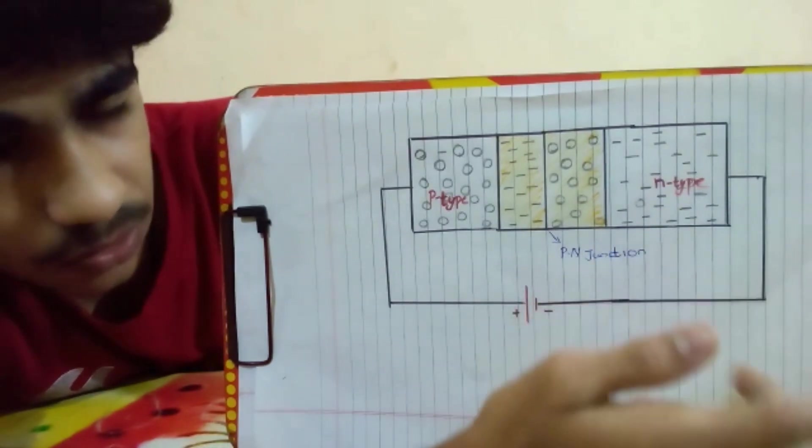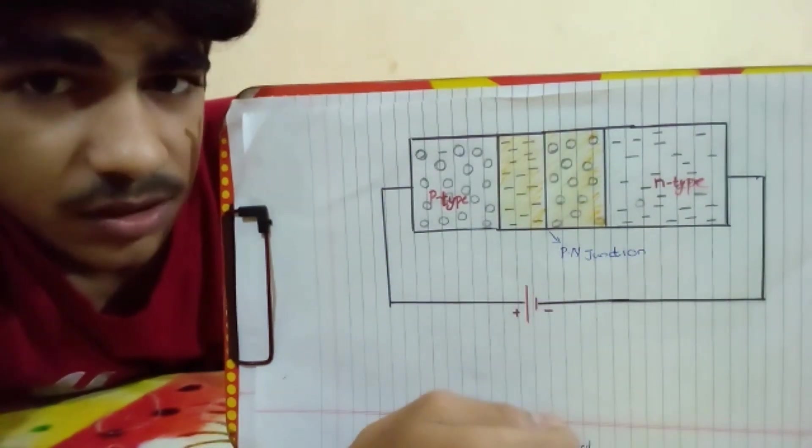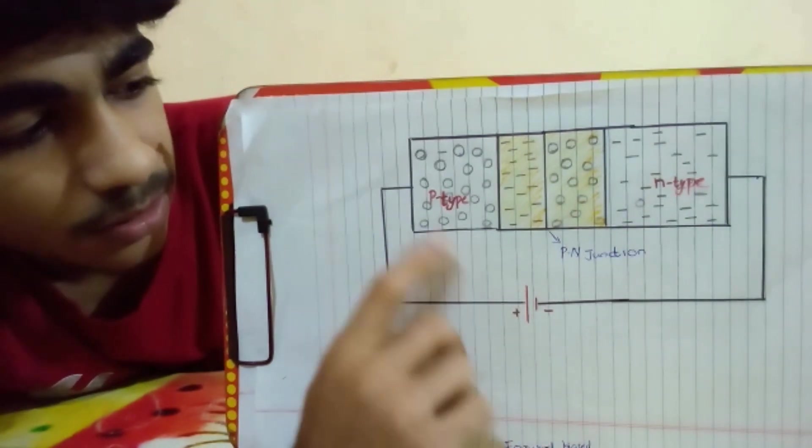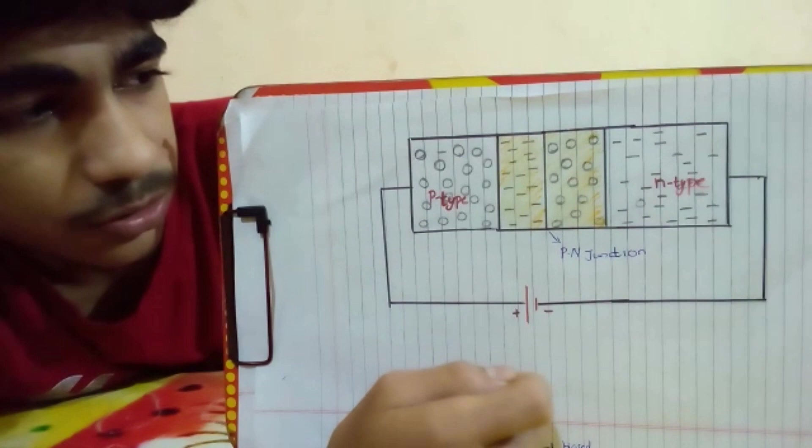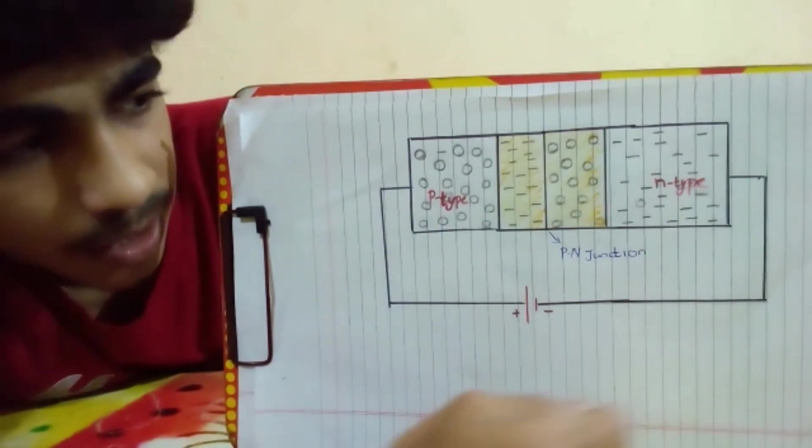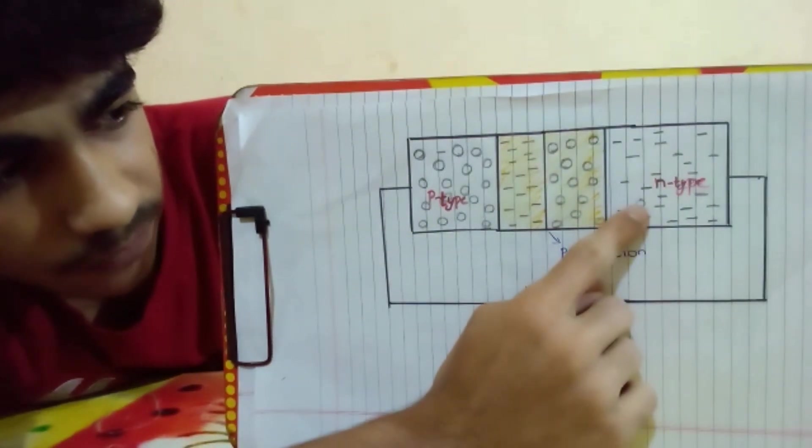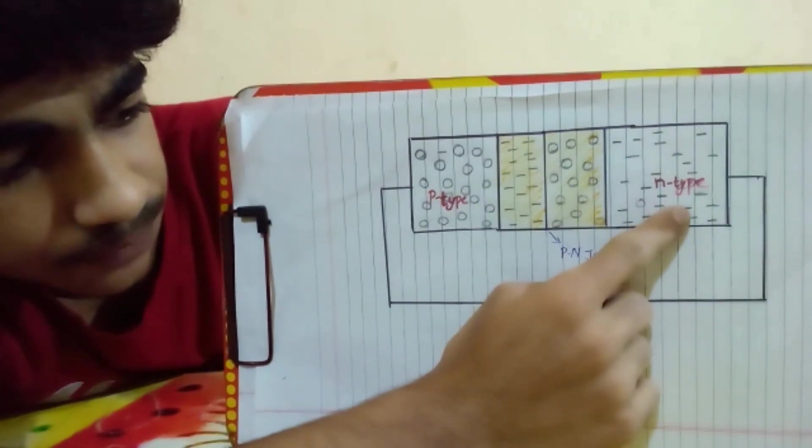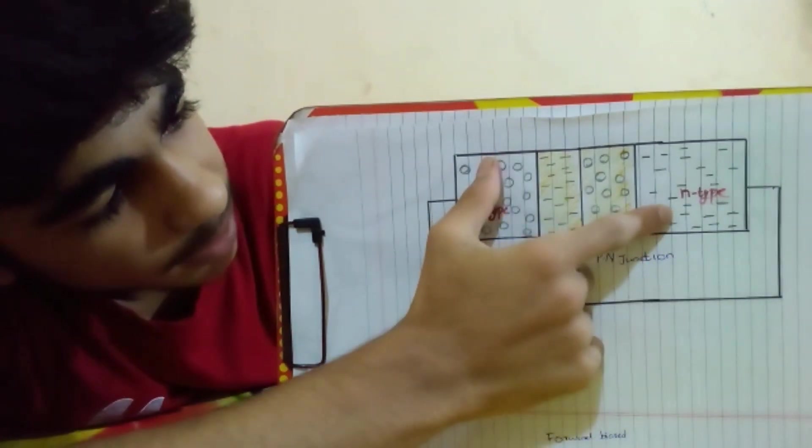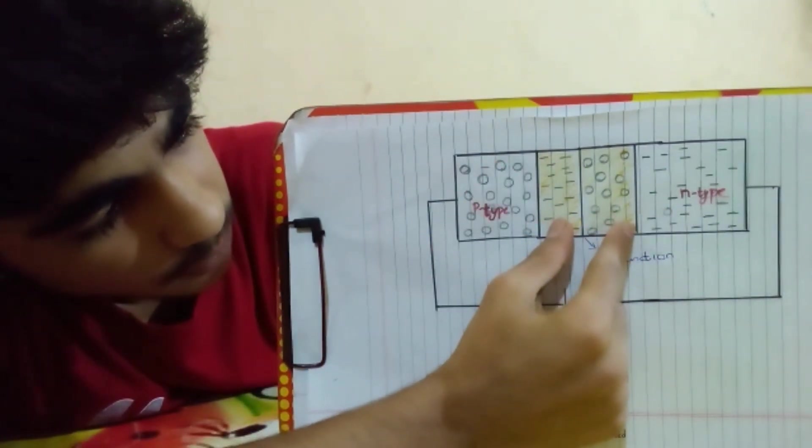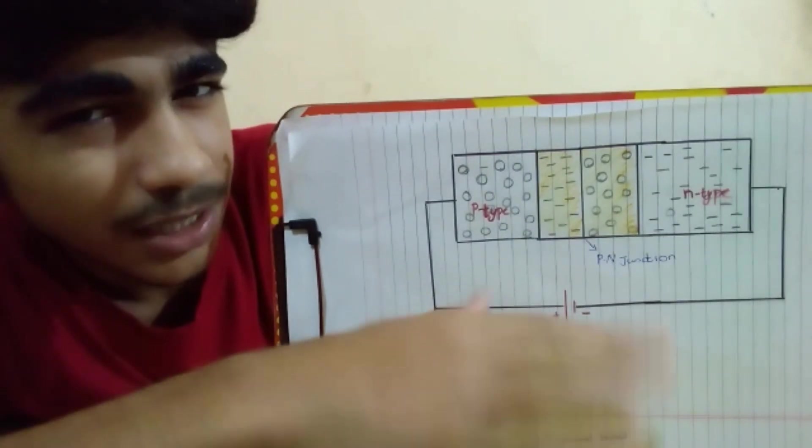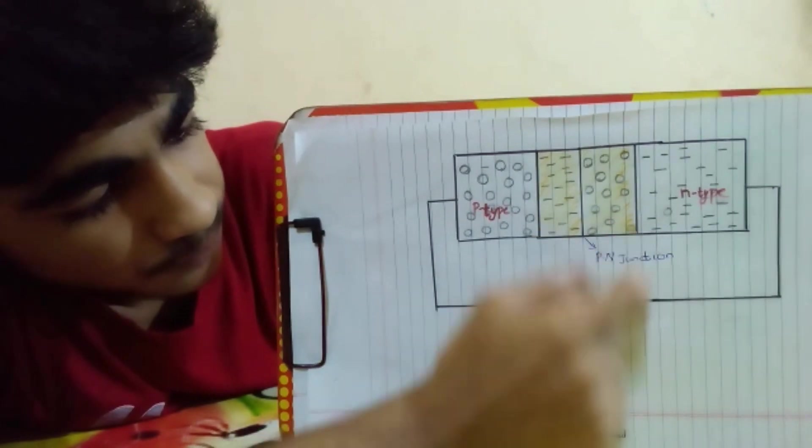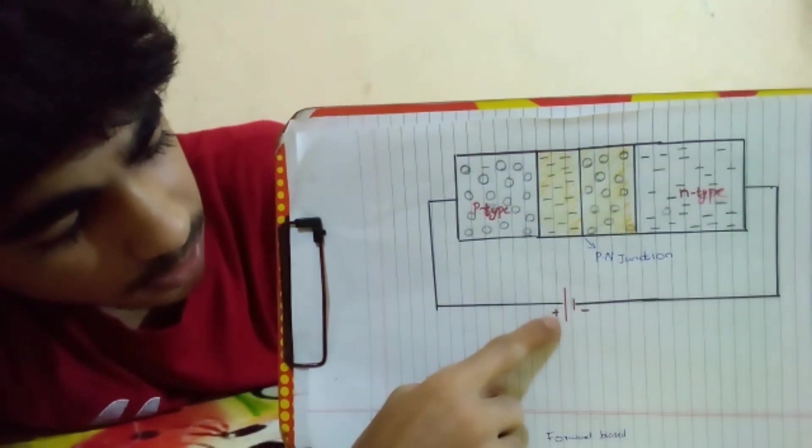As I already told you, the P type contains the holes or the positive charge carriers, while the N type contains the negative charge carriers called electrons. But one thing to remember is that it doesn't mean that the P type only contains holes. There are also the electrons which are the minority carriers. Similarly, over here we have the holes which are the minority carriers, whereas the electrons are the majority carriers. And some of these minority carriers from this region will travel to this region over here unless a state of equilibrium is reached, and this region over here is called the depletion layer.